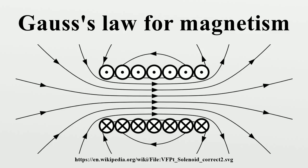Due to the Helmholtz decomposition theorem, Gauss's law for magnetism is equivalent to the following statement: there exists a vector field A such that B equals the curl of A. The vector field A is called the magnetic vector potential. Note that there is more than one possible A which satisfies this equation for a given B field — in fact, there are infinitely many. Any field of the form of the gradient of Φ can be added onto A to get an alternative choice for A, by the identity. Since the curl of a gradient is the zero vector field, this arbitrariness in A is called gauge freedom.